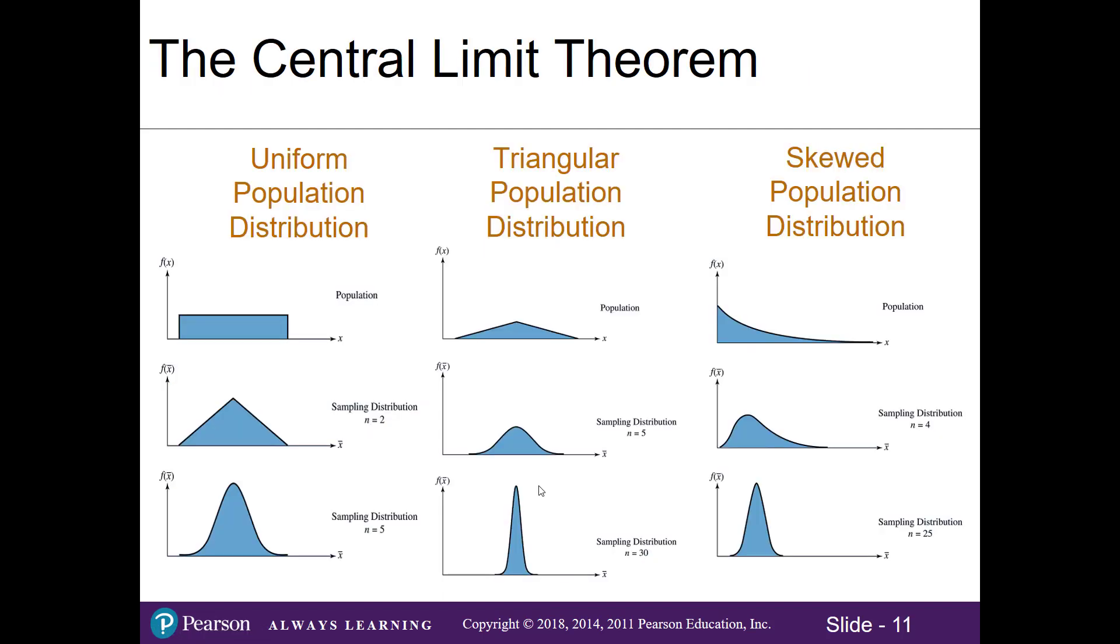This leads us to our central limit theorem. It saves us a lot of time when we're trying to find the probability of an event. Thanks to the previous theorems, when we put them all together, it means that regardless of what our population distribution shape is, it could be uniform, it could be triangular, it could be skewed, it could have multiple modes, that if we have a large enough sample size, our sampling distribution is going to be bell-shaped. That means we only have to learn one distribution, and that's the normal distribution, as opposed to having to learn all these different shapes.